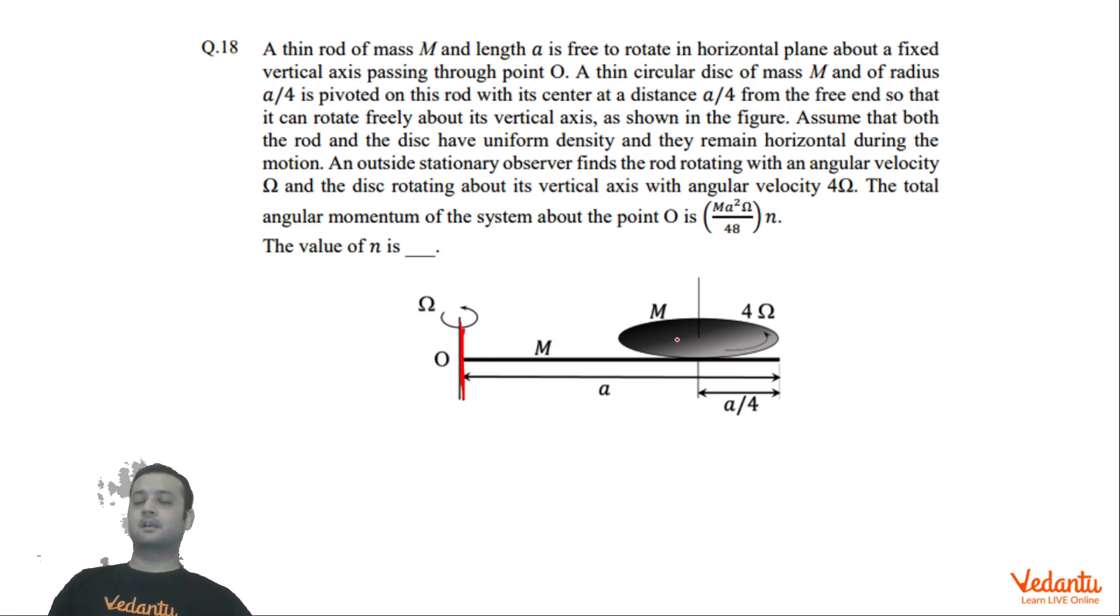Now there's a disc which has been hinged on this rod and rotates about this axis at an angular velocity of 4Ω. We have to find the angular momentum about point O of the whole assembly. Mass of both rod as well as disc is M, and this disc rotates with 4Ω about its center.